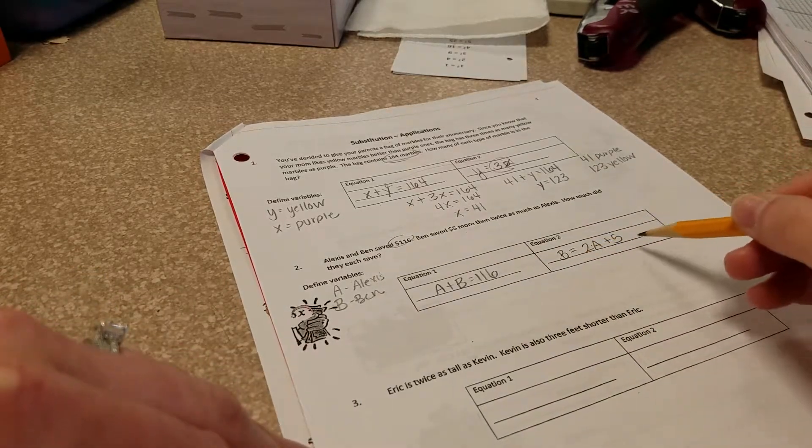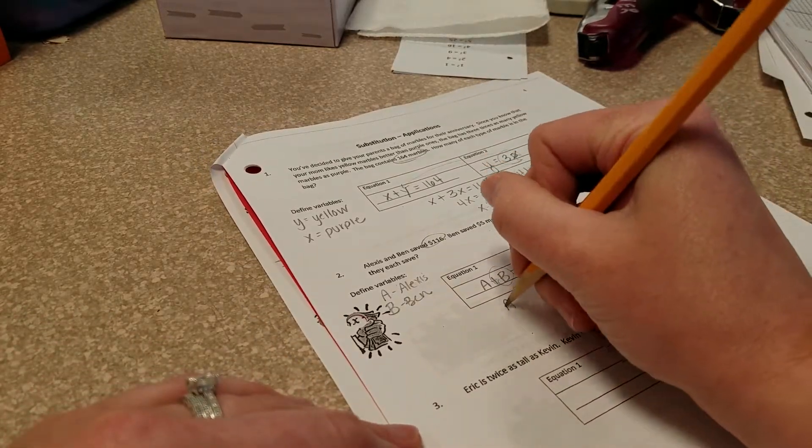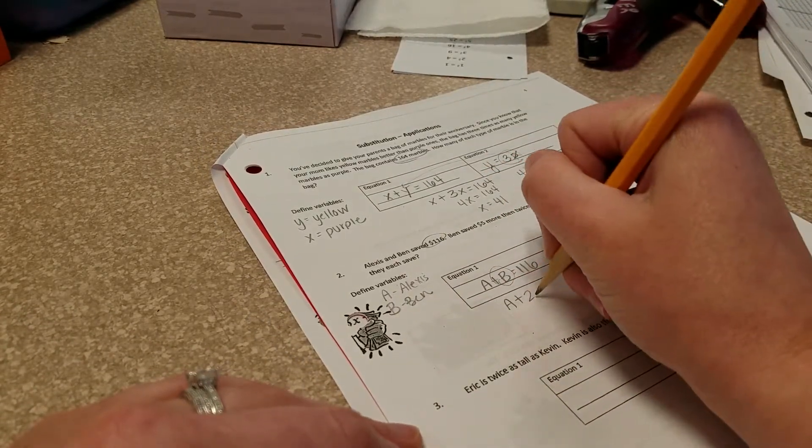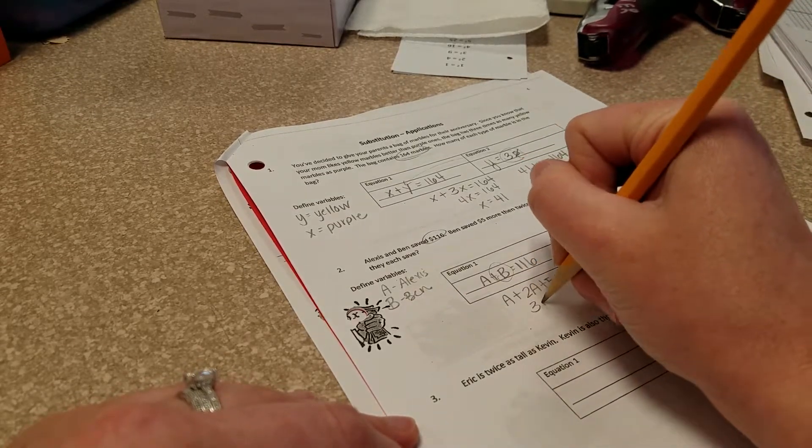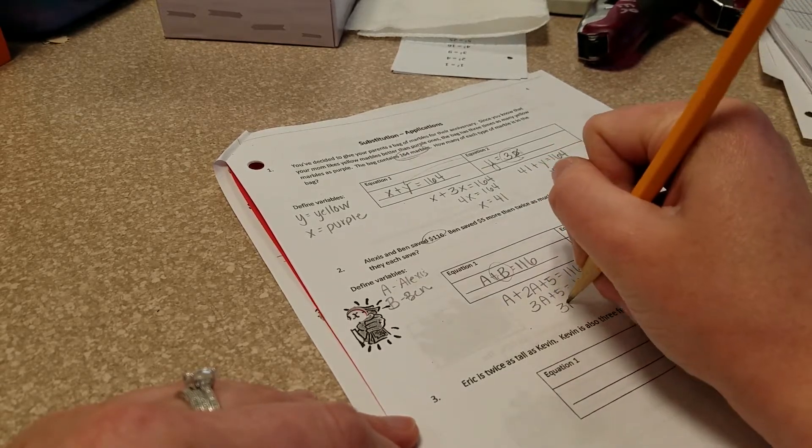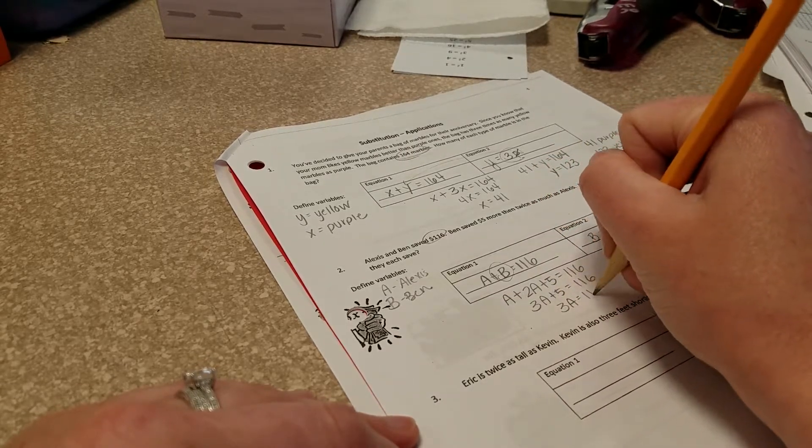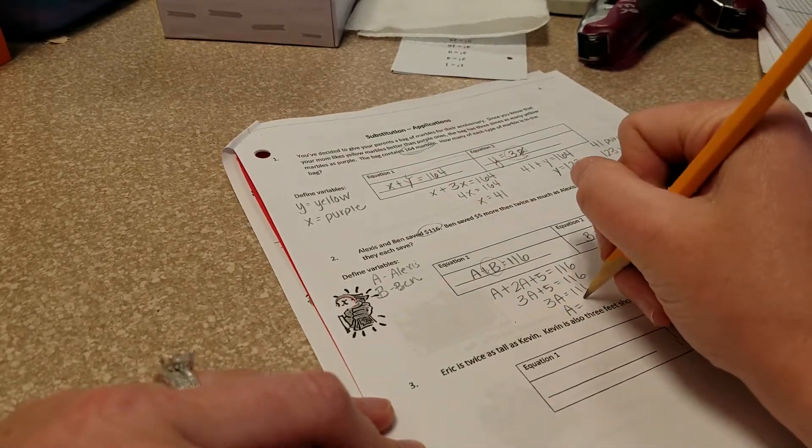So since we already know that B equals this, we're going to plug it in over into our first equation. So A plus 2A plus 5 is equal to 116. So 3A plus 5 equals 116. So 3A is going to equal 111. So A is going to equal $37.